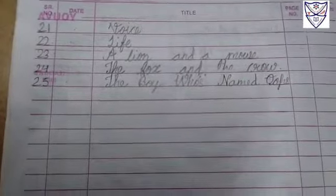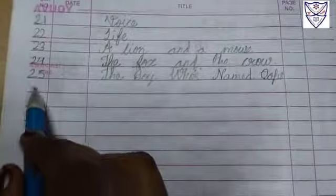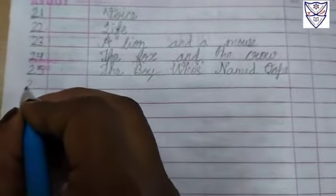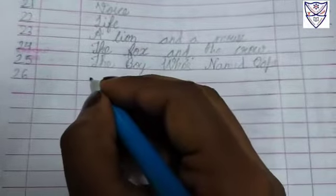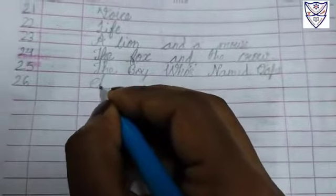Open your cursive writing notebook. Index page. Write serial number 26. Today's date. Write topic. Cloudy day.